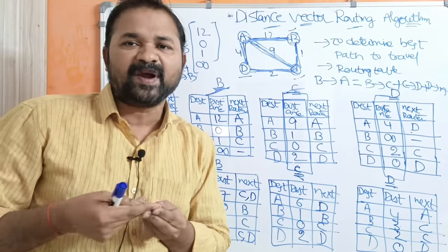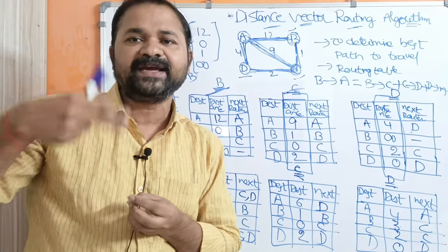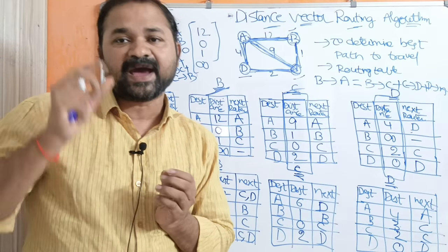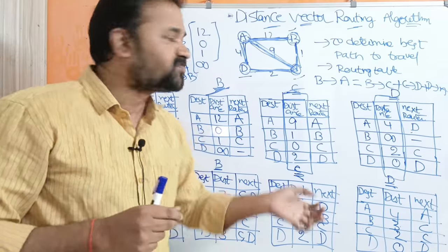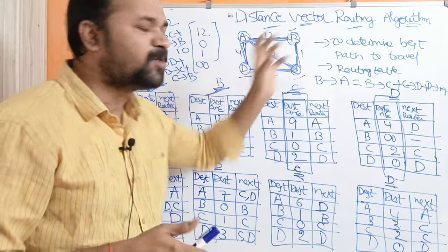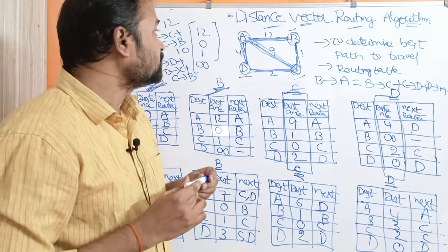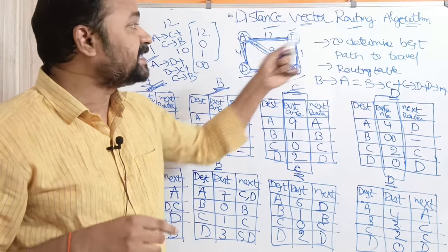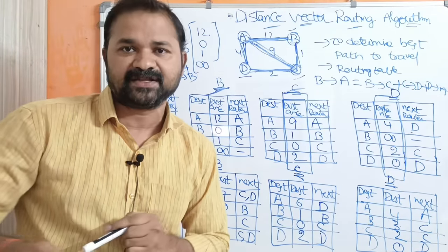If the graph contains 6 routers, then maximum we require 5 steps — that is why it is better to take a minimum number of routers. This is the distance vector routing algorithm.